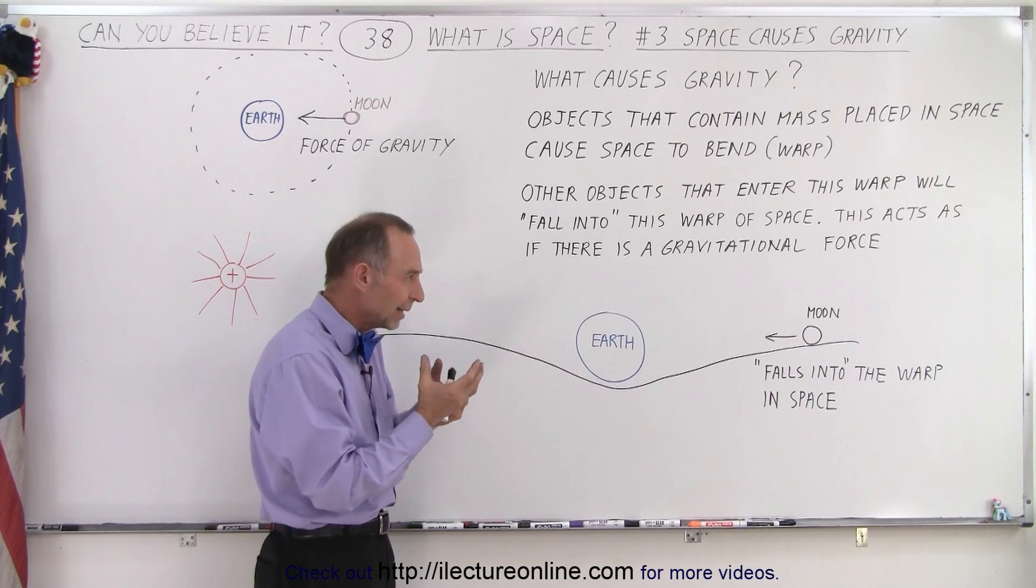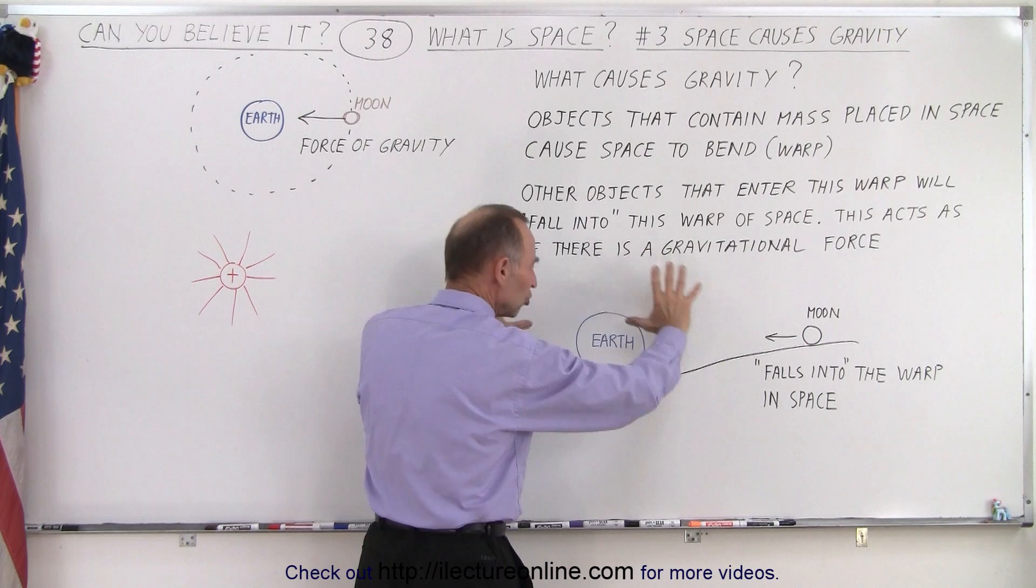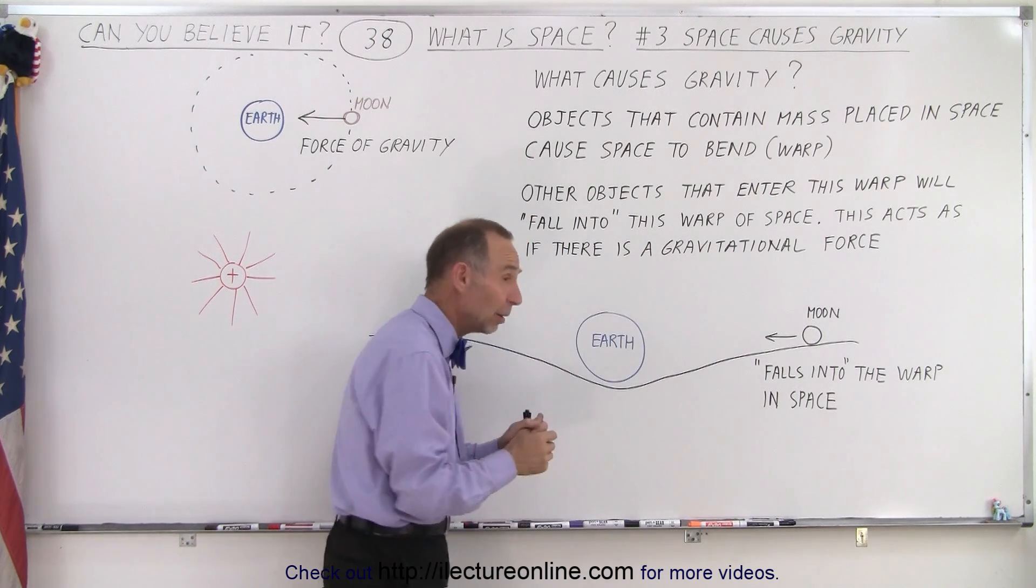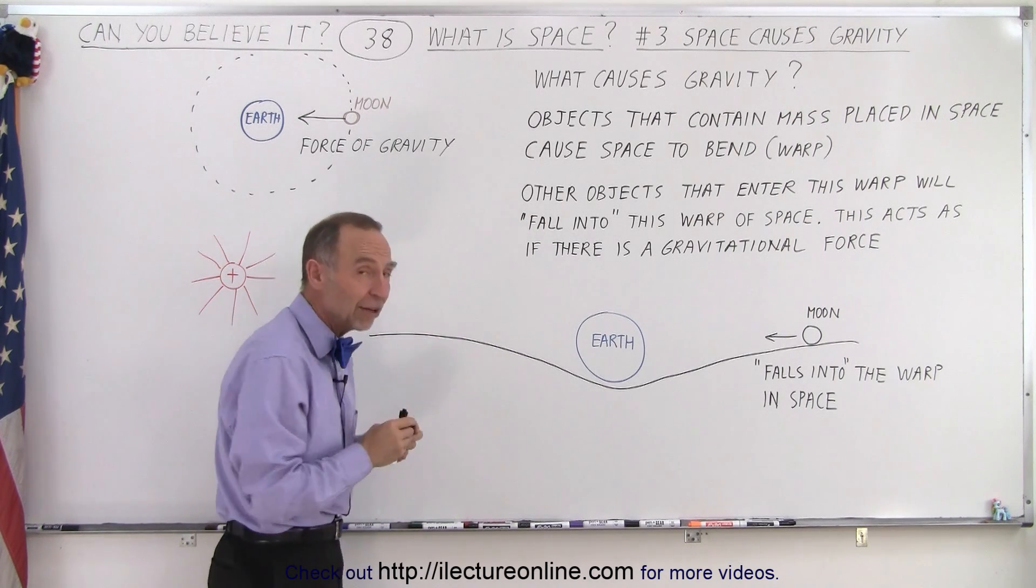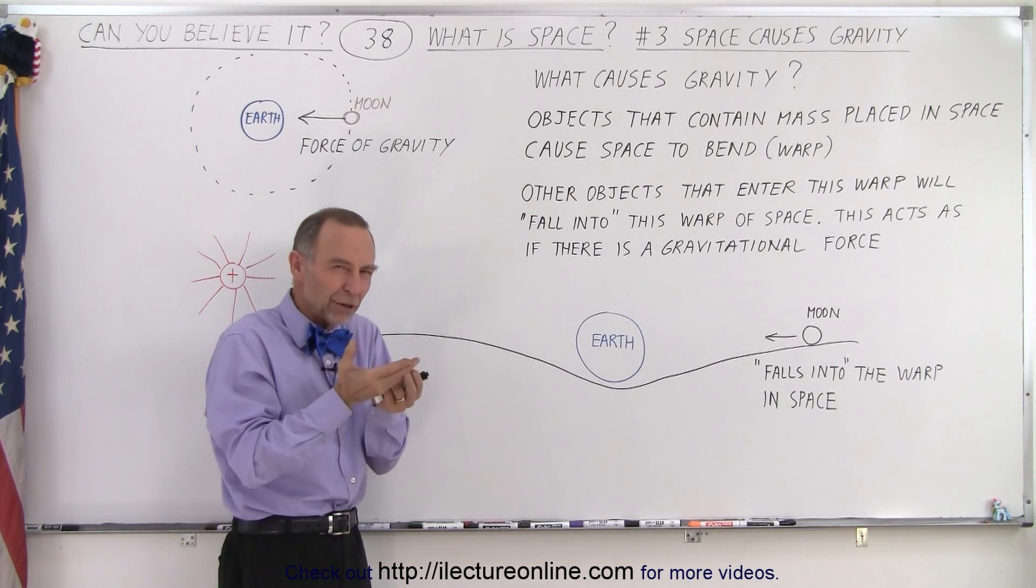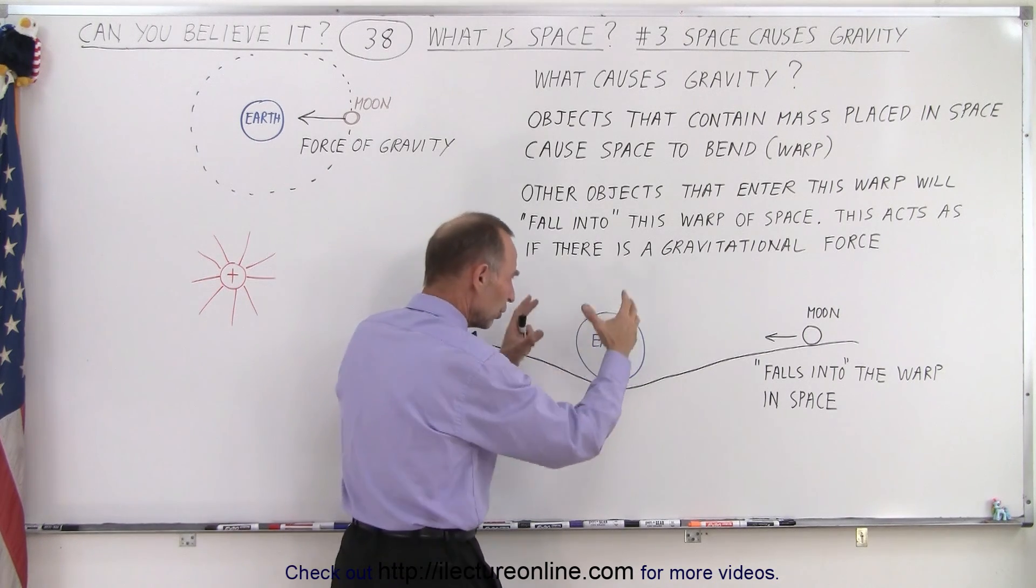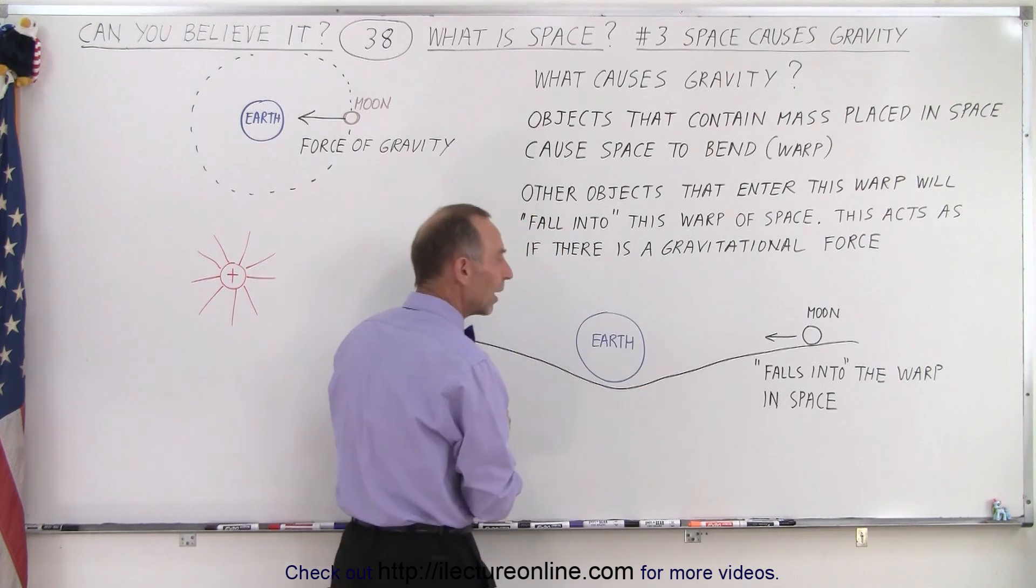And Einstein thought that it had to do something with space changing, the property of space here, causes it to change when you place a large object that has mass in space. Now, even if you put an apple in space, you still have a small gravitational field around it, but it would be so small you could barely measure it, because an apple would be very small. But a big object like the moon or the earth or the sun, they have a significant effect on space around it.